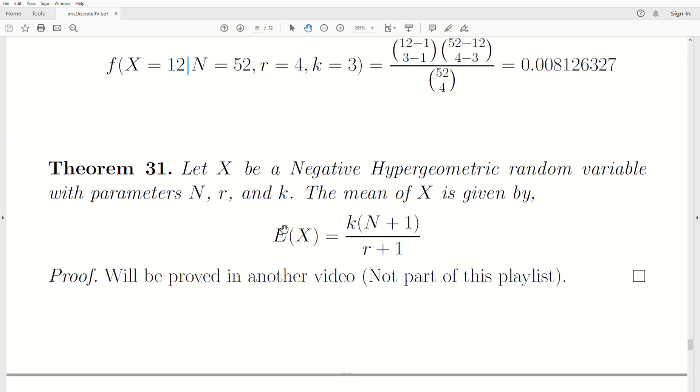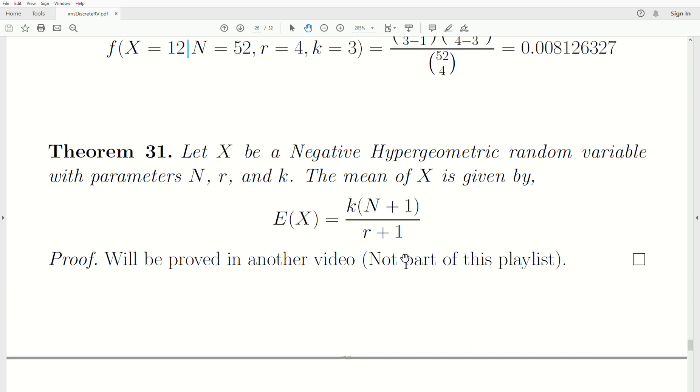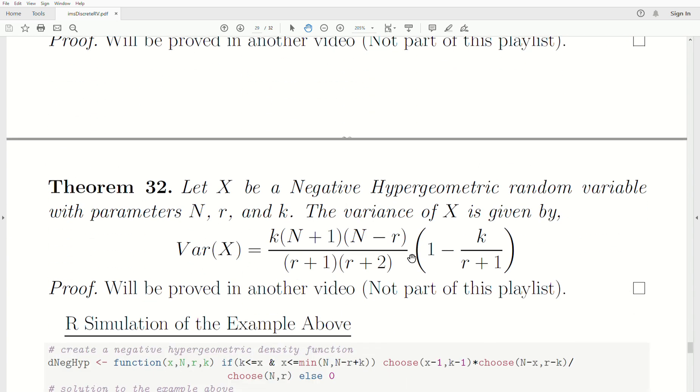Now we're going to look at the mean and the variance. I'm going to provide the formulas but we're not going to calculate them because they're a little bit tedious and I think it's going to detract from the beauty of the negative hypergeometric distribution. I'll prove them in another video, not part of this playlist. So let X be a negative hypergeometric random variable with parameters n, r, and k. The mean of X is given by k times n plus 1 over r plus 1. The variance is given by this crazy formula.